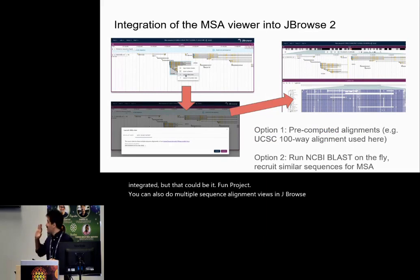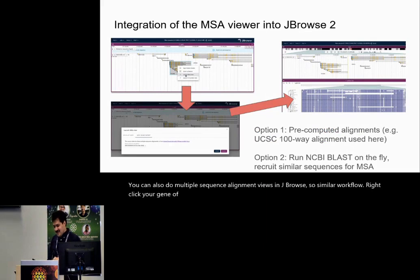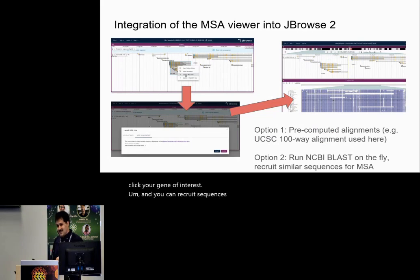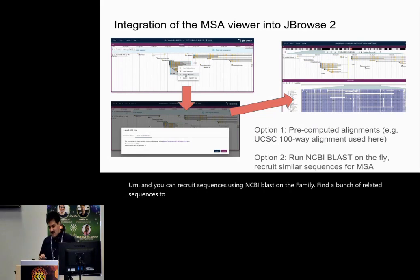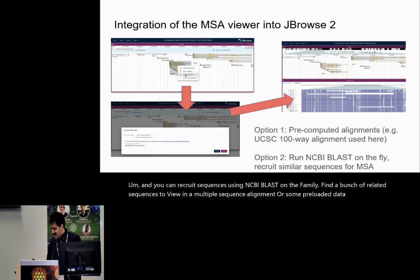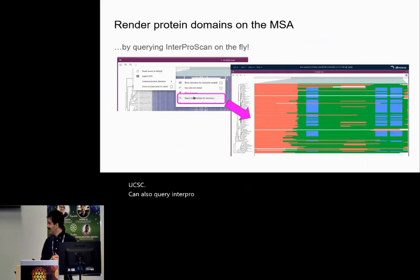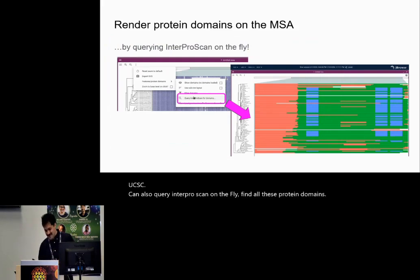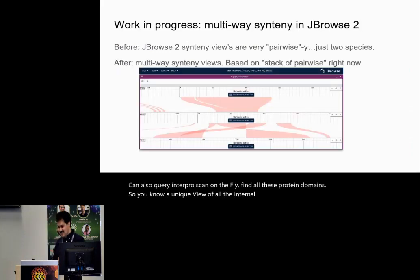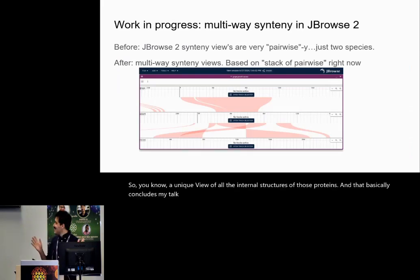A similar workflow: right-click your gene of interest and you can recruit sequences using NCBI BLAST on the fly, find a bunch of related sequences to view in the multiple sequence alignment, or use some preloaded dataset — this is from UCSC. You can also query InterProScan on the fly, find all these protein domains, and show a unique view of all the internal structures of those proteins.